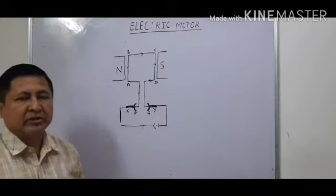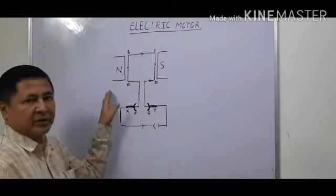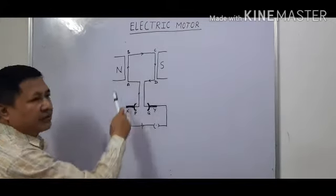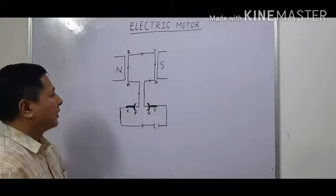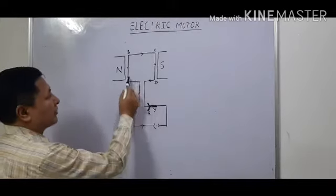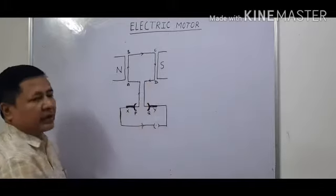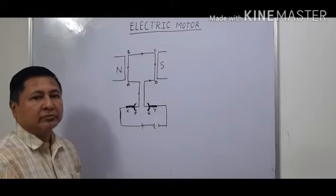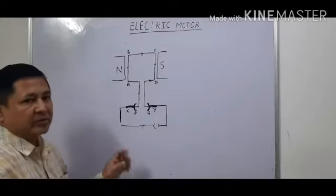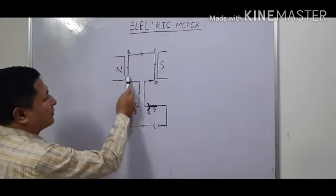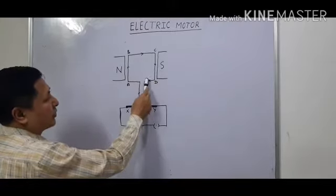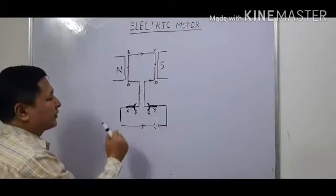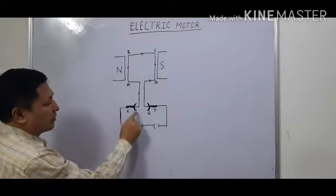First we should know what is the construction, or what the electric motor consists of. Here you can see two magnets having North and South Pole. Then we have an armature — that means the insulated copper wire wound on a soft iron core, that is known as armature. You can see this is a coil here: A, B, C, D. A large number of turns are there in this armature.